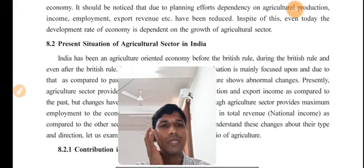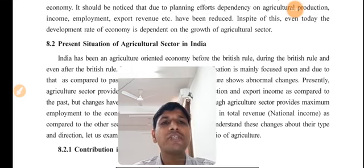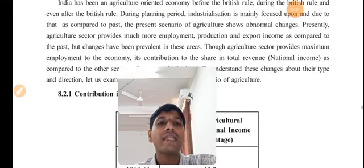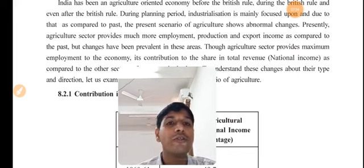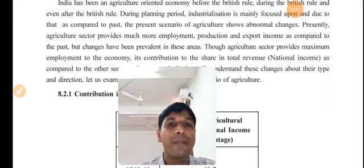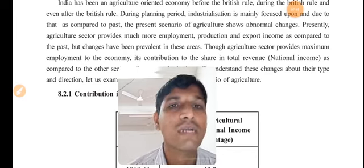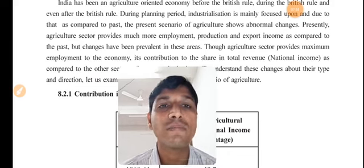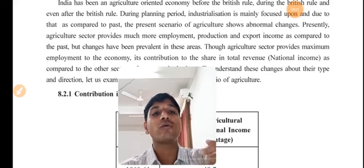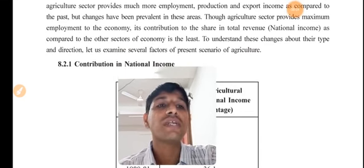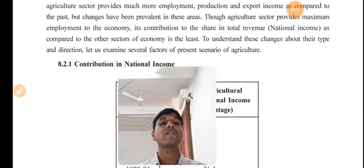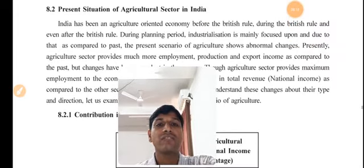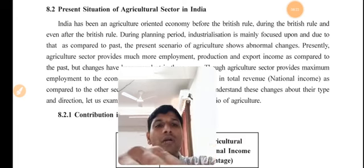India has been an agriculture-oriented economy before the British rule, during the British rule, and even after. During the planning period, industrialization was mainly focused upon, and due to this, the present scenario of agriculture shows significant changes compared to the past. Presently, the agriculture sector provides more employment, production, and export income than in the past, but changes have been prevalent. Though agriculture provides maximum employment, its share in total revenue compared to other sectors is very small. Let us now examine several factors affecting the scenario of agriculture.